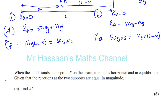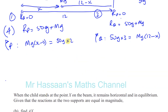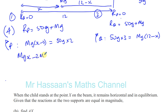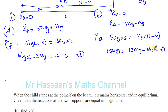So basically we have this pair of equations which we can solve simultaneously. They both have X and M in them. Let's simplify: equation 1 gives MGX minus 2MG equals 100G, and equation 2 gives 150G equals 12MG minus MGX. You've got MGX and minus MGX, so if we do equation 1 plus equation 2, the MGX disappears. You'll have 10MG equals 250G.